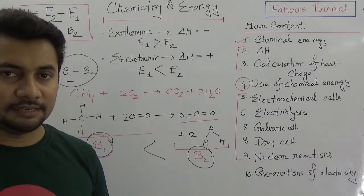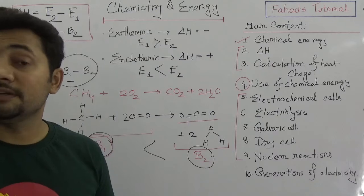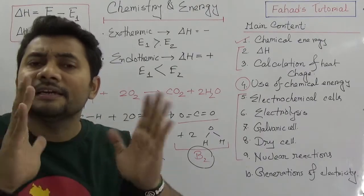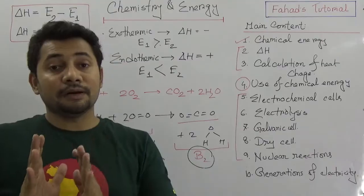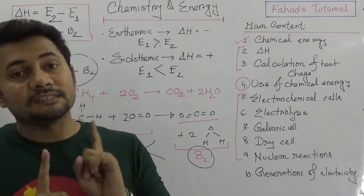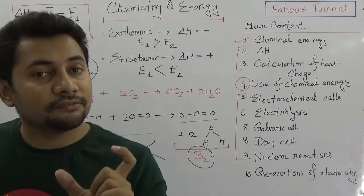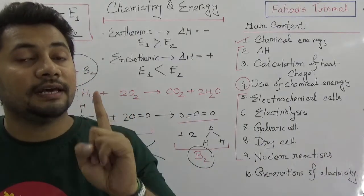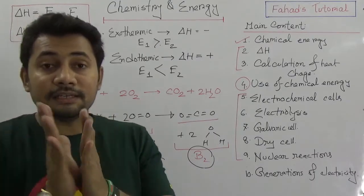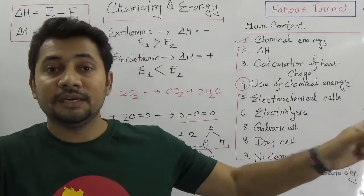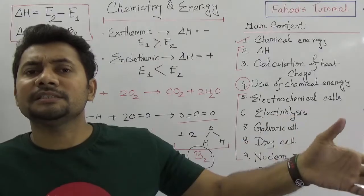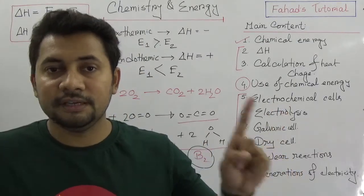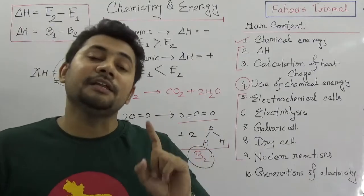I hope this is clear. The key point is why E1 and E2, and B1 and B2 are reversed in the del H calculations. Del H = E2 minus E1: E1 is the total internal energy of the reactant. When E1 is greater than E2, as in exothermic reaction, E2 minus E1 is definitely negative. Two important things you must remember: del H is negative in exothermic reactions, and del H is positive in endothermic reactions.